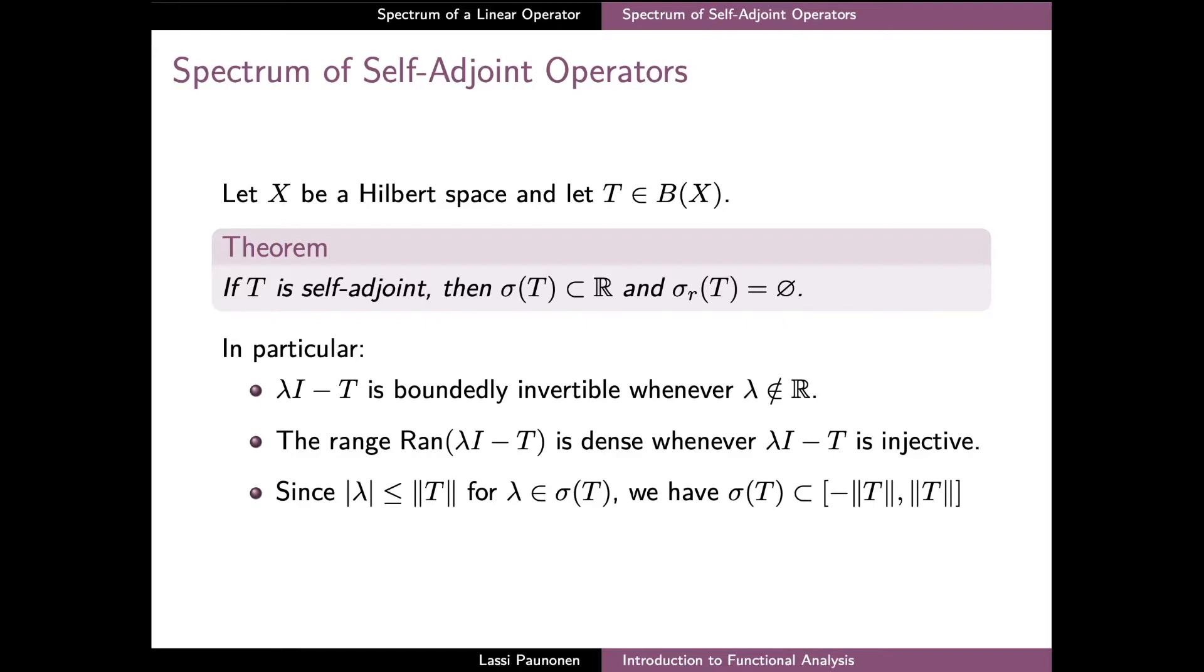The property that the residual spectrum is empty means precisely that the range of λI − T is dense whenever the operator is injective. Otherwise there are no restrictions on the types of the spectrum, and a self-adjoint operator can have a spectrum consisting only of eigenvalues, only of continuous spectrum, or having both of these types of spectrum.